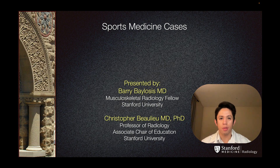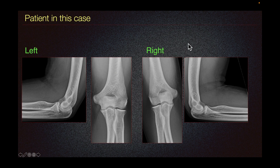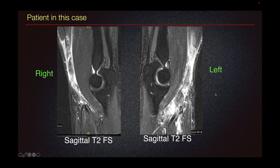This is Barry Bellosis, one of the musculoskeletal radiology fellows at Stanford University. The patient in this case presented with bilateral AP and lateral elbow radiographs, which are normal. This is often the case in the setting of biceps tendon tear. In some cases we can see some edema, but in this specific case we have a normal radiograph. The patient then underwent MRI.